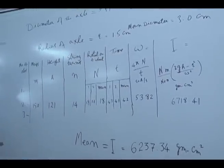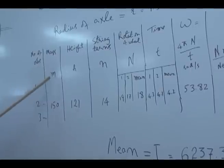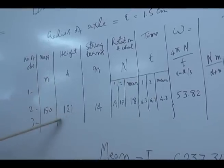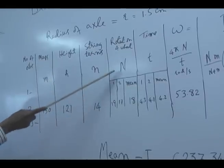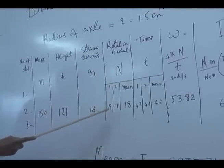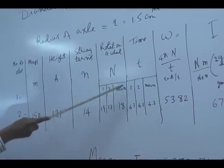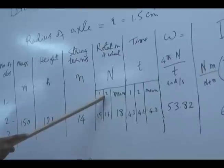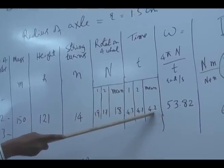And for example, taking one reading: mass small m 150, height small h 1.21, string turn small n 14, and rotation of the wheel you will do two times, first is 19, second is 17, its average value is 18, then time corresponding to first reading will be 4.3, corresponding to second reading was 4.1, its mean value is 4.2.